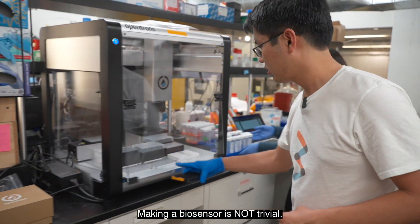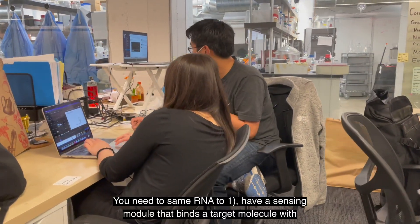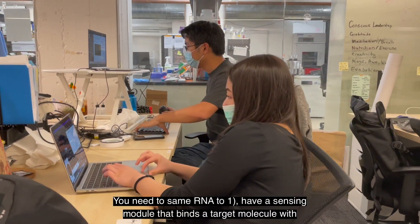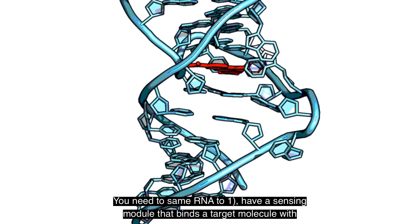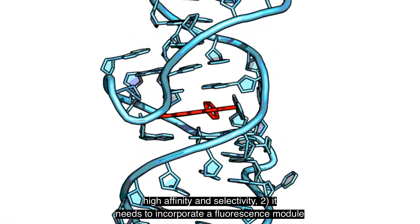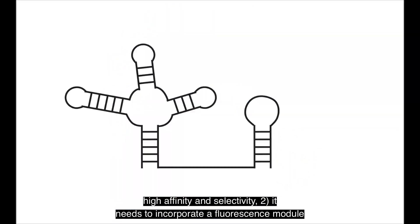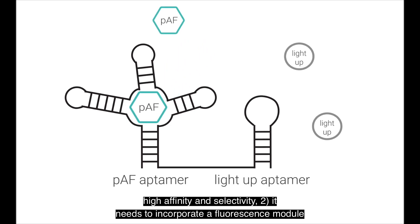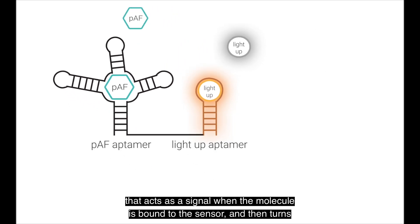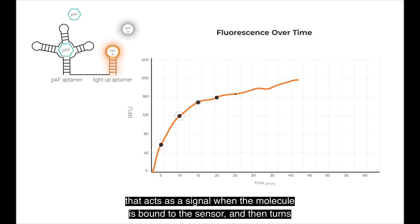Making a biosensor is not trivial. You need the same RNA to have a sensing module that binds a target molecule with high affinity and selectivity. It needs to incorporate a fluorescence module that acts as a signal when the molecule is bound to the sensor, and then turns off when the molecule unbinds.